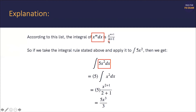Now, why am I saying that? Well, if you look at our expression in the problem, you see 5x squared dx. Here's the one that you're going to match it to in the handbook: x to the m dx. It's the same type. So therefore, we know that we need to use this.